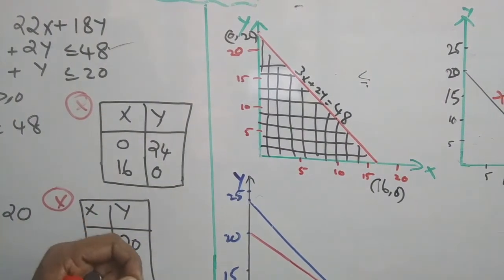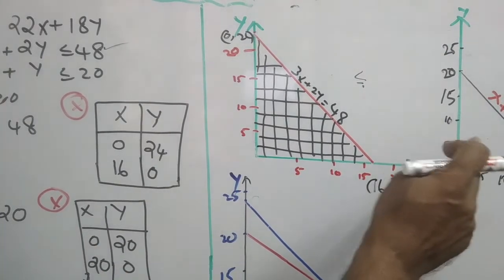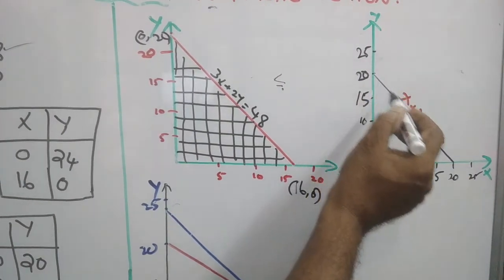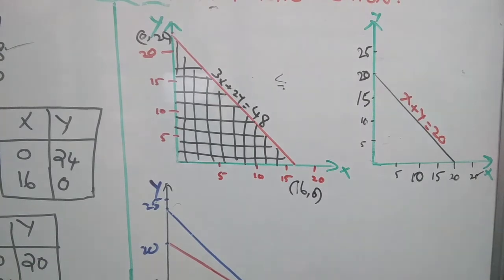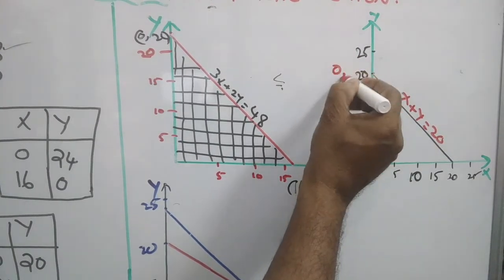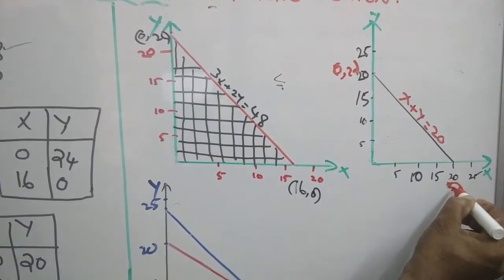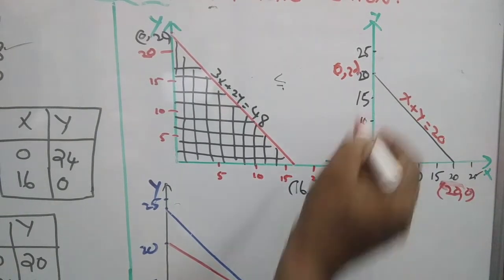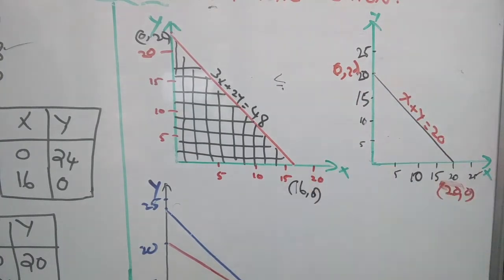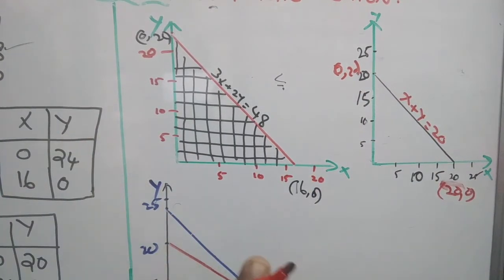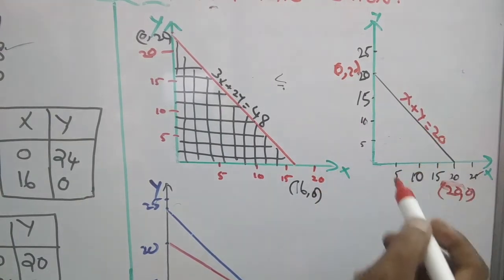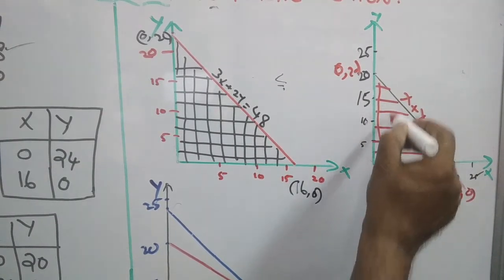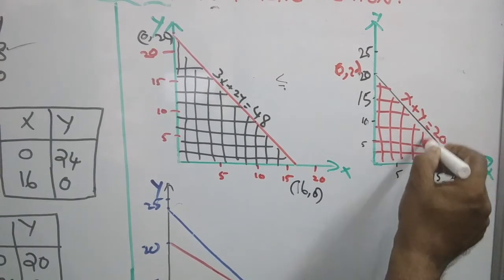However, this is not yet the complete feasible region of the problem since we have one more constraint: x plus y equals 20. The coordinates are (0, 20) when x equals 0 and (20, 0) when y equals 0. Joining these two coordinates gives the straight line x plus y equals 20. Since the constraint is less than or equal to 20, any region below the straight line represents the feasible region for that constraint.